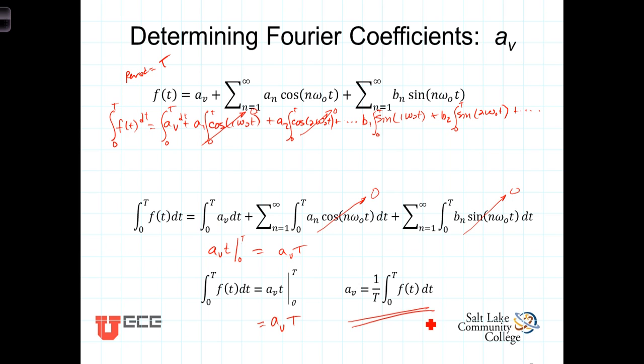But let's look at this just a little more carefully. For some periodic function f of t, if we integrate over the period and divide by T, that is actually calculating the average value of this function. In other words, a sub v is just the average of f of t. And we sometimes refer to that as the DC component of f of t.